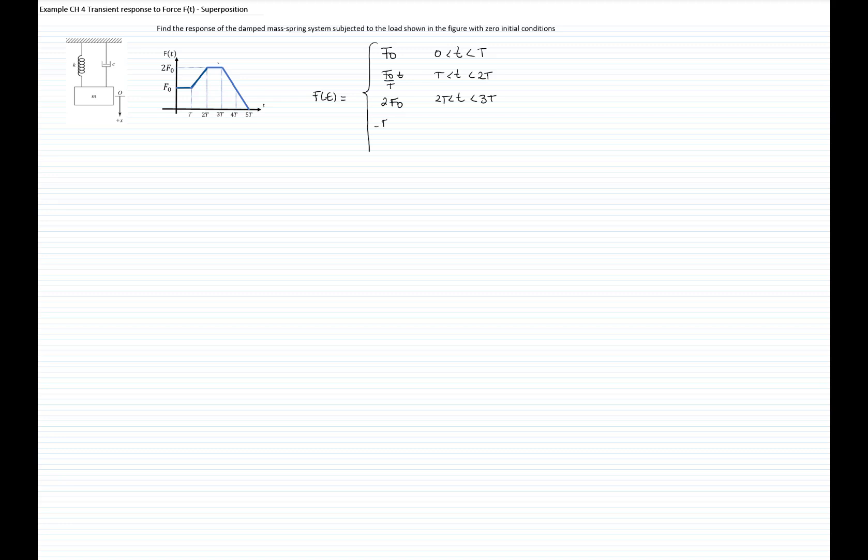And then we have a ramp of the same slope, negative F sub 0 over T, plus 5F sub 0 for the period of time 3 capital T and less than 5 capital T. And then for T greater than 5T, the function is equal to 0.